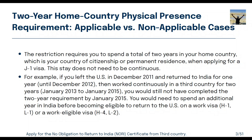Let's say you then found a job in a third country like Germany and worked there for more than two years. If you then want to get a waiver, you are still not eligible because you have spent only one year in India. You have to stay another one year in India. This does not need to be continuous — for example, stay one month, return to Germany, then stay another 11 months.